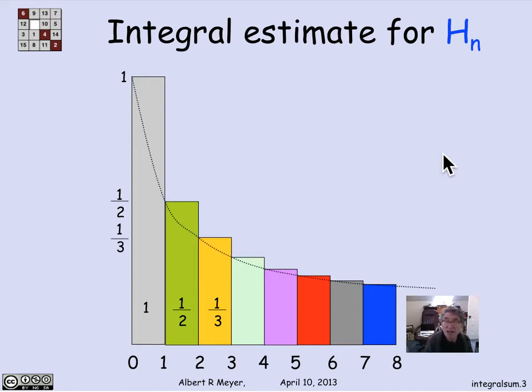The way I'm going to get a lower bound on this number H_n is by looking at this curve that goes through the corners of the rectangles. And if you check it, that curve is 1 over x plus 1. That is, when x is 0, I'm at 1 over 1. When x is 1, I'm at 1/2, the height of the second rectangle, and so on.